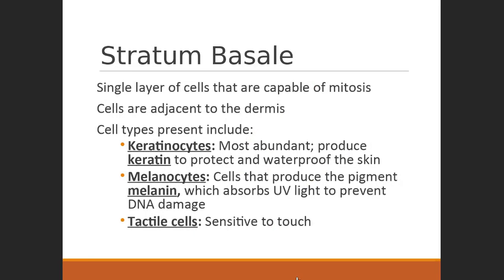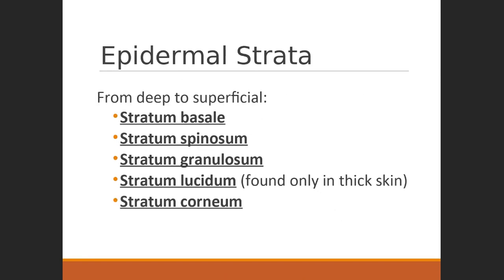The stratum basale is the deepest layer of the epidermis and of all the cells in the epidermis, these are the only ones capable of cellular replication — the only ones capable of mitosis. The more superficial we get, the further those cells are from their blood supply, making it harder to maintain homeostasis. The layers represent a life cycle: a new daughter cell spawned from the stratum basale migrates through these layers so that by the time it reaches the stratum corneum, it is a long-since dead, fragmented cell.